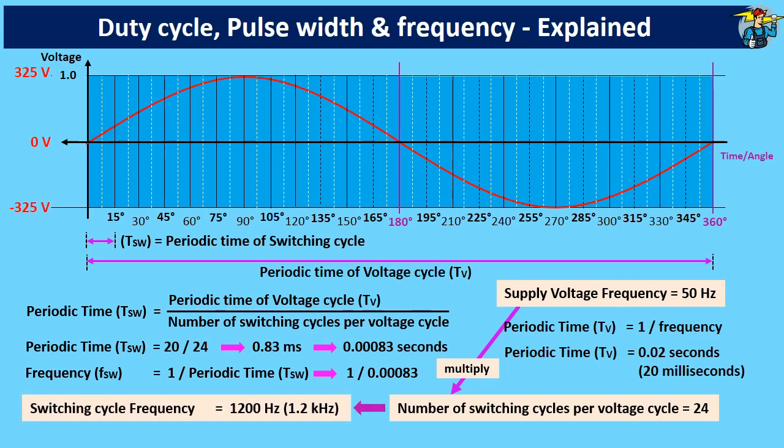So by modulating pulse widths of these 24 switching cycles of 1.2 kHz, you get this wavy form, but still it is not that close to the smooth sine wave shown originally.